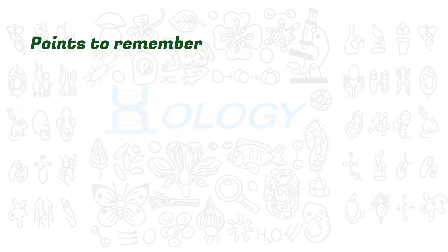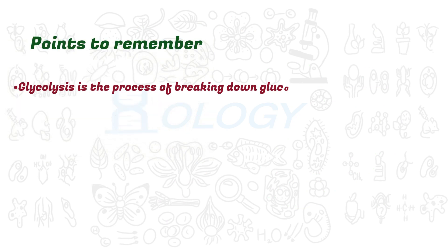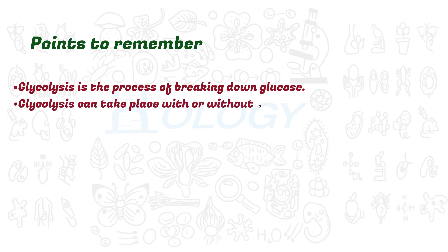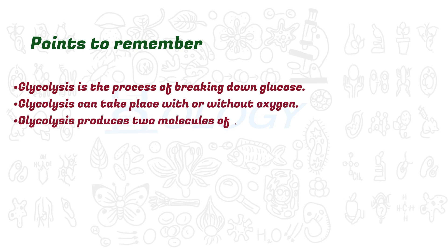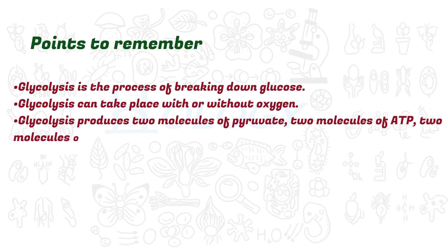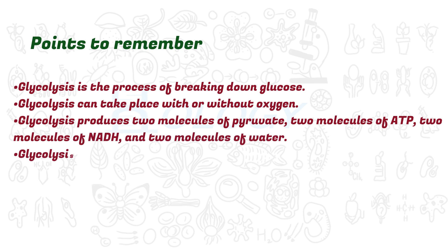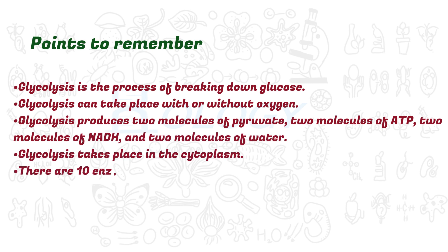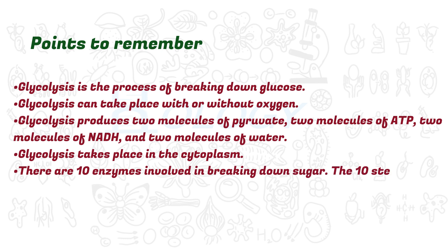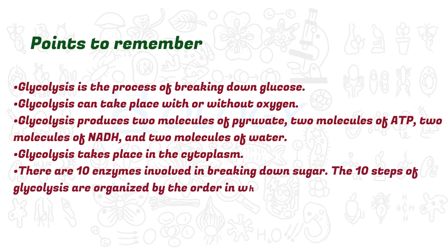Points to remember: Glycolysis is the process of breaking down glucose. Glycolysis can take place with or without oxygen. Glycolysis produces two molecules of pyruvate, two molecules of ATP, two molecules of NADH, and two molecules of water. Glycolysis takes place in the cytoplasm. There are 10 enzymes involved in breaking down sugar, and the 10 steps of glycolysis are organized by the order in which specific enzymes act upon the system.